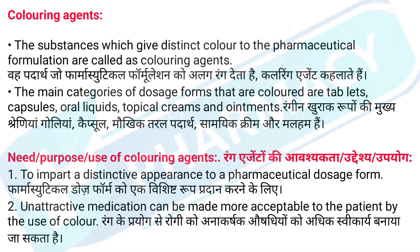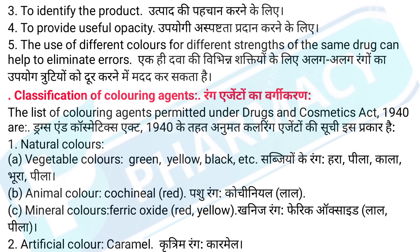Need, purpose, and use of coloring agents: 1. To impart a distinctive appearance to a pharmaceutical dosage form. Pharmaceutical dose form ko ek vishish troop pradhan karne ke liye. 2. Unattractive medication can be made more acceptable to the patient by the use of color. Rang ke prayog se rogi ko anakarshak aushadhiyo ko adhik swikarya banaya ja sakta hai. 3. To identify the product. Uthpaad ki pehachan karne ke liye.